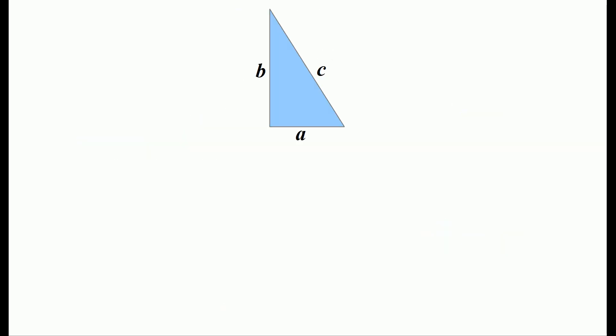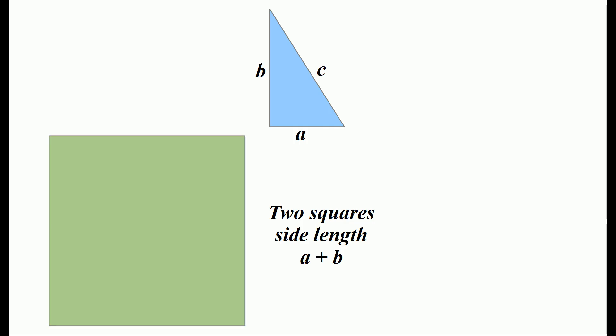We'll start out with the right triangle that has legs of A and B and a hypotenuse C. The first step is to construct two identical squares that each have a side length of A plus B.